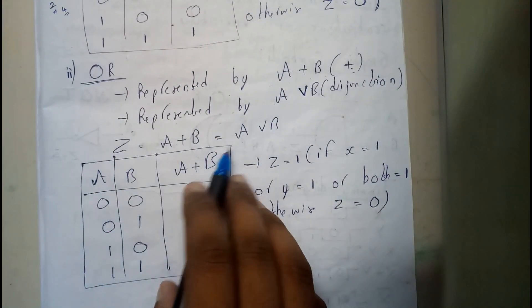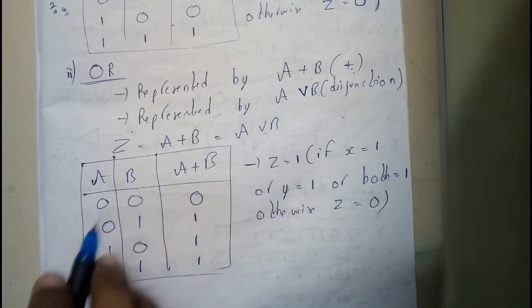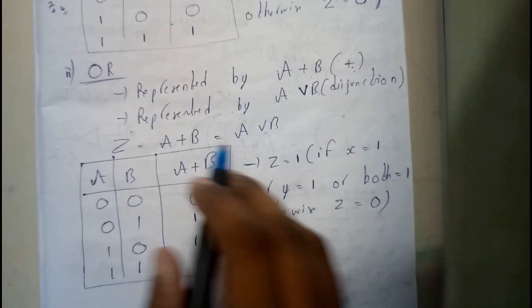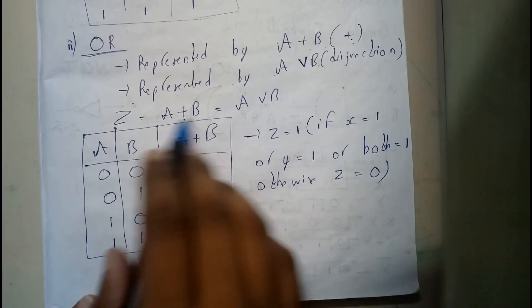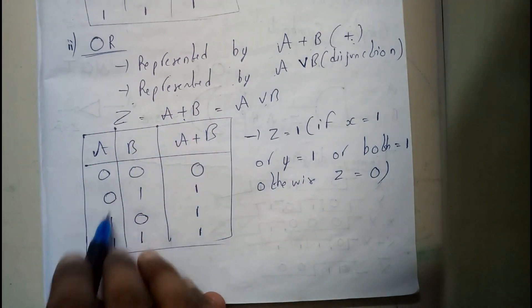Okay, Z equals A plus B equals A disjunction B. So it is an operation plus. Here we are having A, B, two variables, so four combinations.